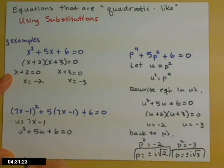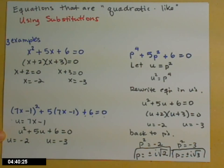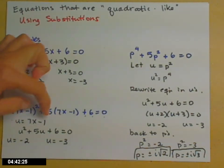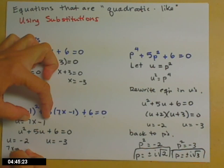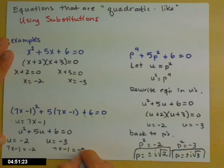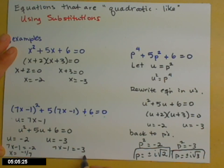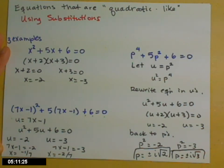Skipping the factoring step since we've done it a couple of times, the solutions are u = -2 and u = -3. But we want x, not u. Since u = 7x - 1, we get 7x - 1 = -2 and 7x - 1 = -3. Adding 1 and dividing by 7: x = -1/7 and x = -2/7. And we're done.